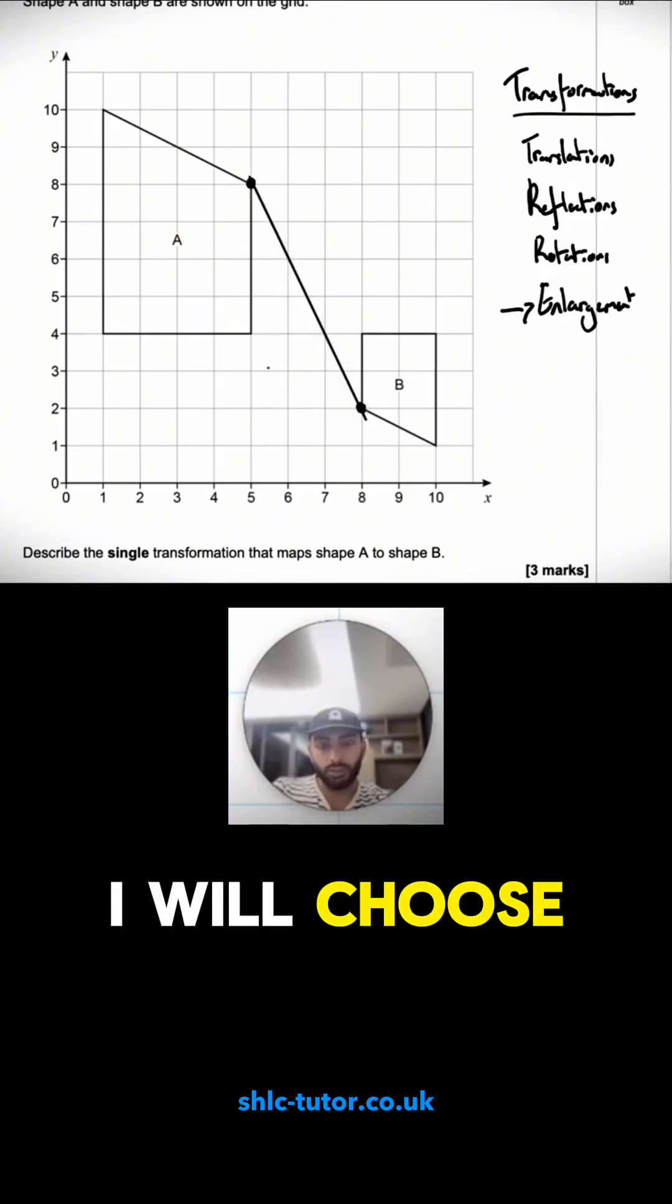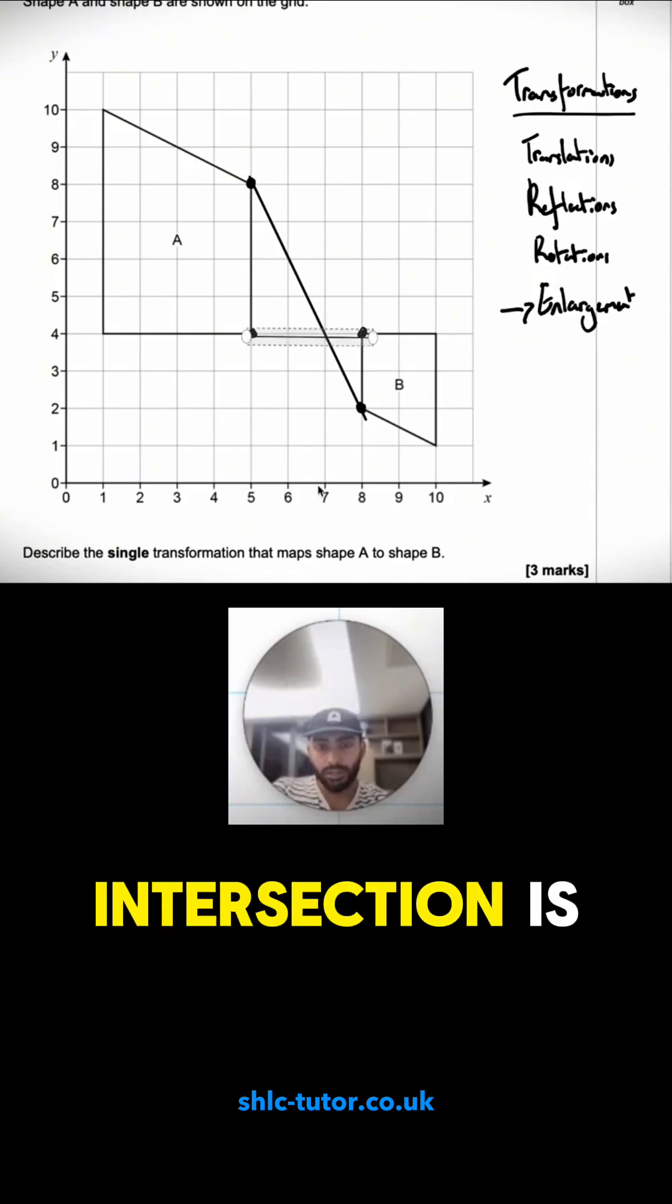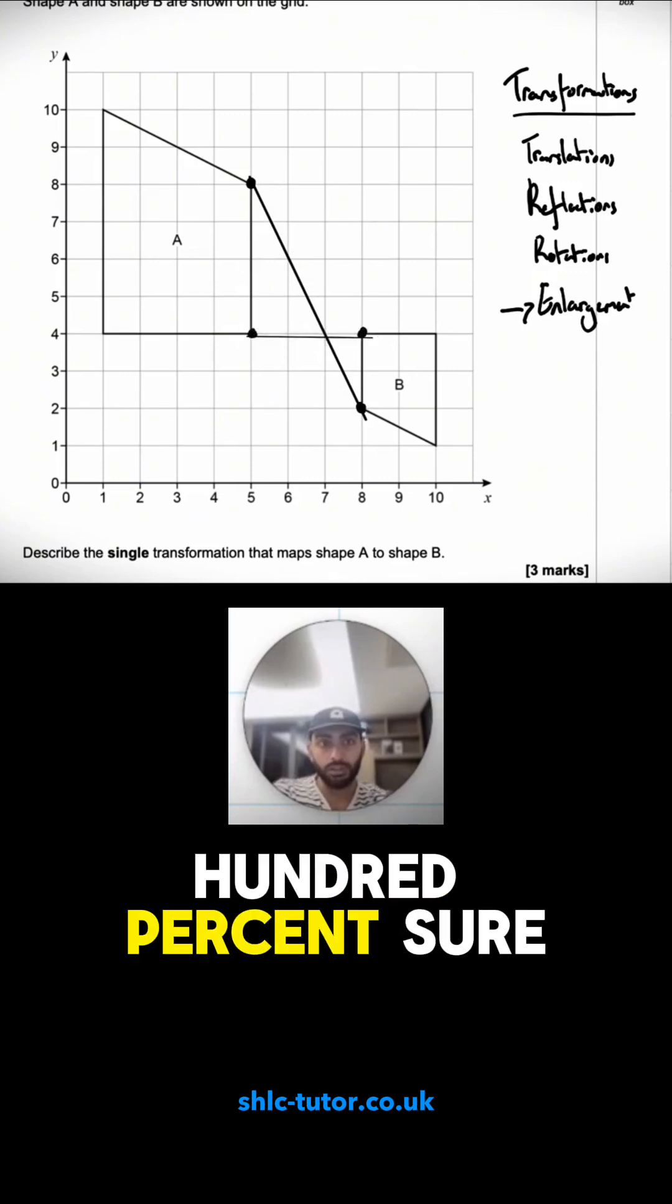Next point I will choose this top corner with this top corner. If I join those two up I can see the line of intersection is at 7-4 and I'll just do one more just to be 100%.